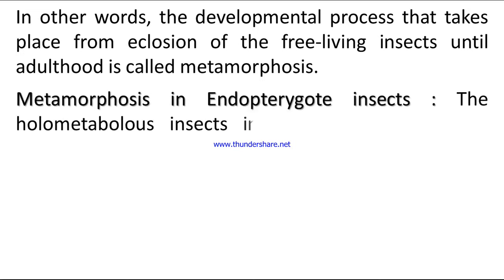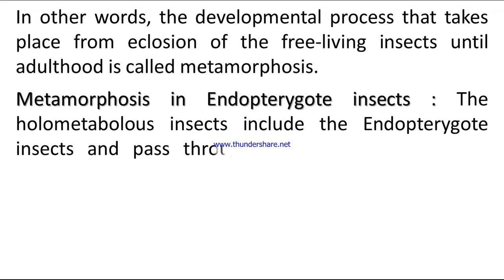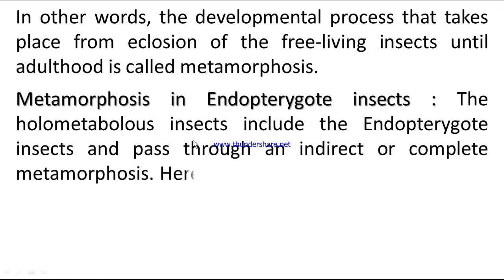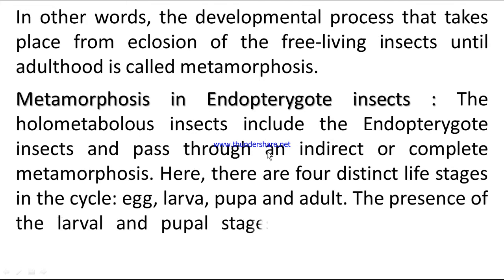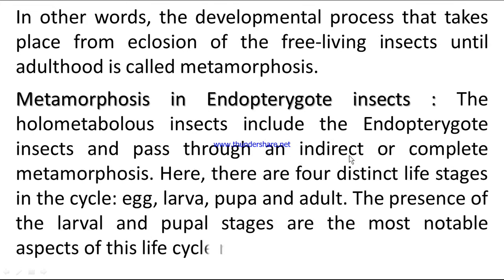Metamorphosis in endopterygoid insects: The holometabolous insects include the endopterygoid insects and pass through an indirect or complete metamorphosis. Here, there are four distinct life stages in the cycle: egg, larva, pupa, and adult. The presence of the larval and pupal stages are the most notable aspects of this life cycle model.